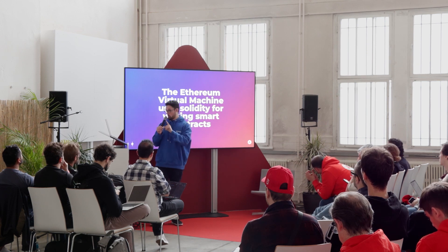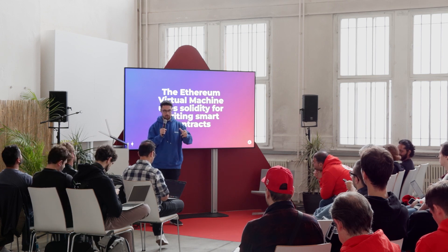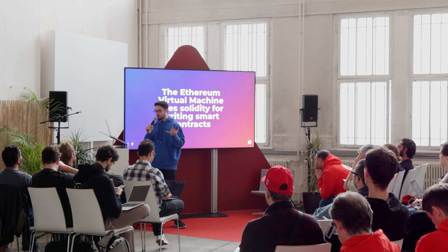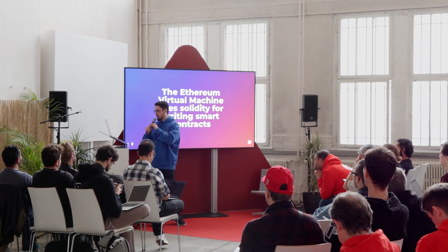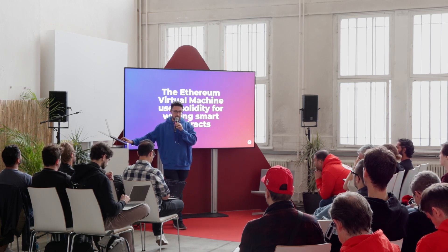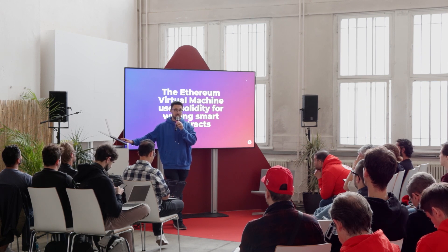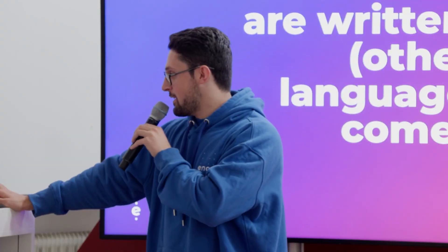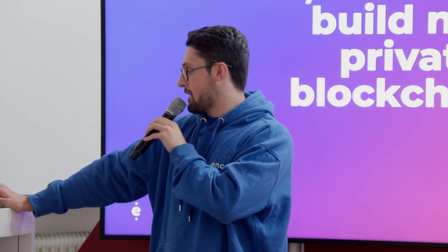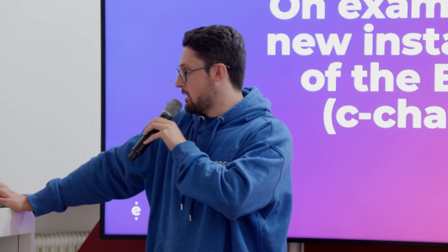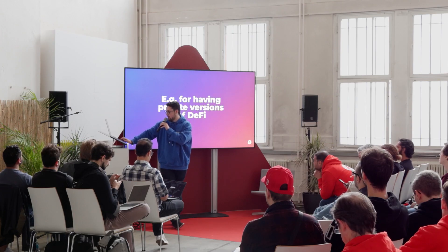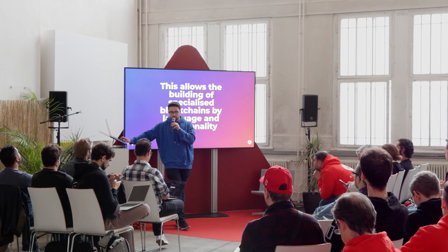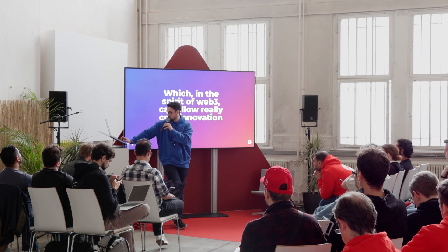Every blockchain on Avalanche is an instance of a VM. You don't need to worry about networking or consensus structure — that's abstracted away when you use subnets. But you have to build your own VM, written in Go — more languages are to come. You can just fork Ethereum and have your own EVM with your own set of validators, run Solidity and write smart contracts. The C chain is an example of a subnet and an EVM. This allows us to build new private blockchains and have private versions of DeFi.